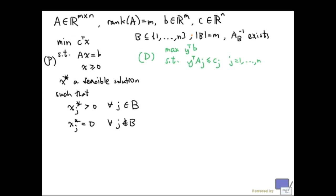And we are given an m element subset of the index sets of the variables. And we are told that the submatrix of A with columns indexed by B has an inverse. And suppose that x star is a feasible solution such that xj star is positive for all j in B and 0 everywhere else.